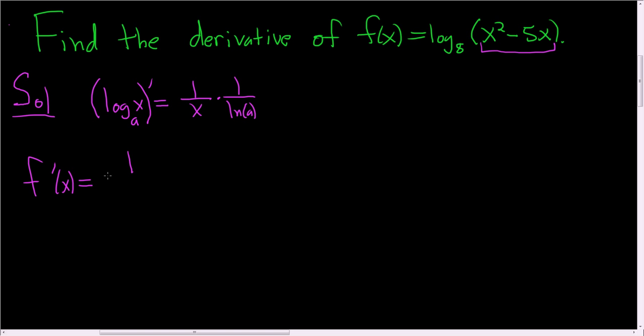So it's 1 over this stuff. 1 over x squared minus 5x times 1 over the natural log of 8. And then now we use the chain rule. We multiply by the derivative of the inside. The derivative of x squared is 2x, and the derivative of 5x is 5. So we have minus 5.